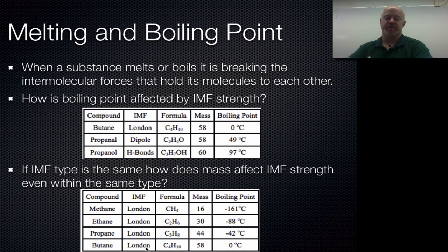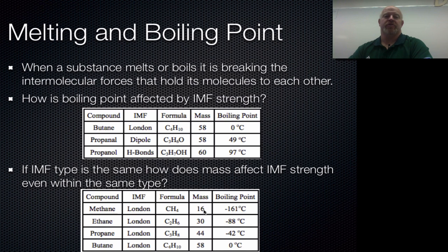The smaller the molecule, the weaker the London dispersion forces it can generate. Butane, even though it's still considered a London dispersion force compound, can generate a strong enough force to hold its boiling point to about 0°C, while propane only reaches negative 42°C. So the take-home is: the more massive or bigger you are, the stronger the intermolecular forces, and therefore the higher the boiling point.